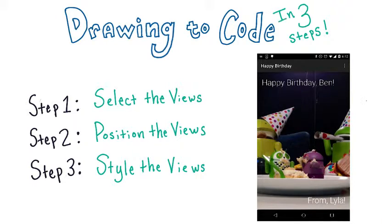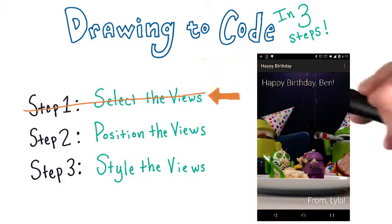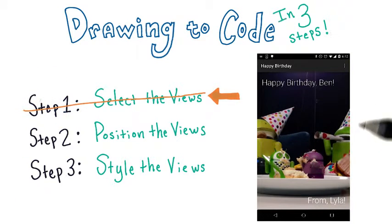Great, so you've actually finished step one. Now that we have these two text views and this image view, we should decide roughly how we're going to get them to the correct place on the screen.